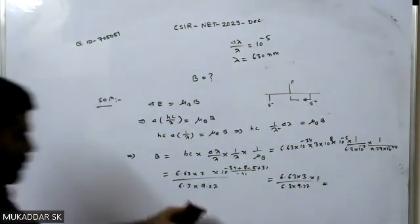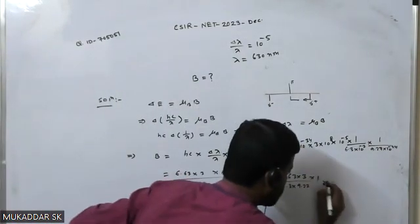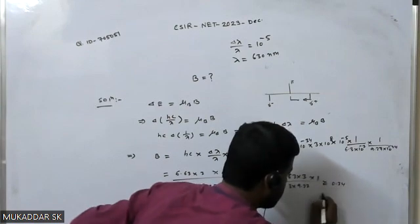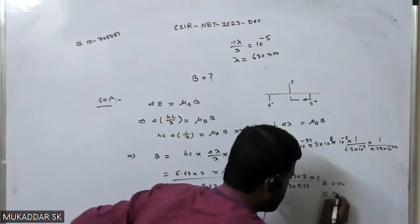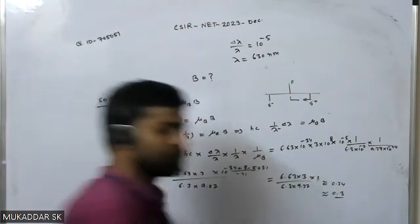So now if you calculate this value, that will be around 0.34. So according to the given option, that will be close to 0.3, so option C will be the correct one. Thank you very much.